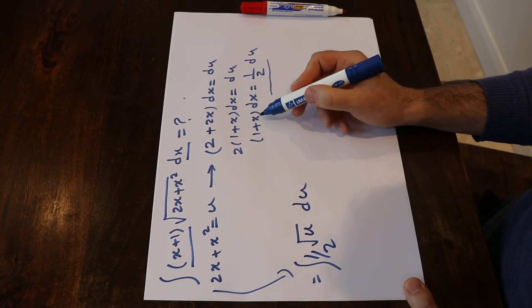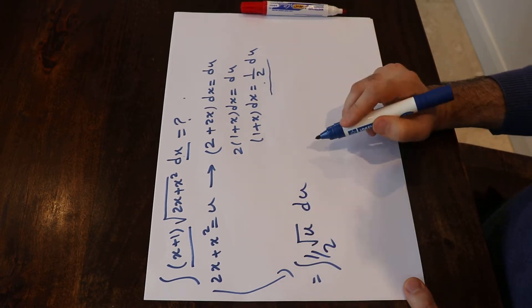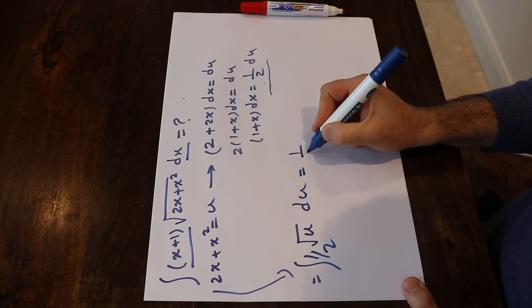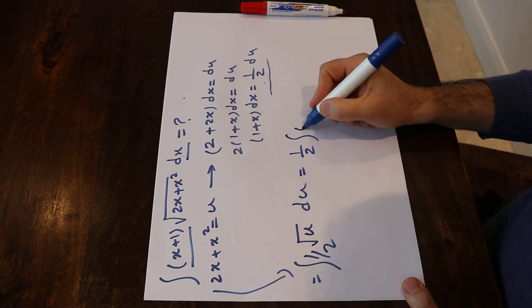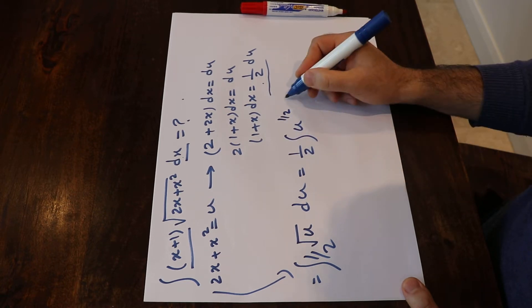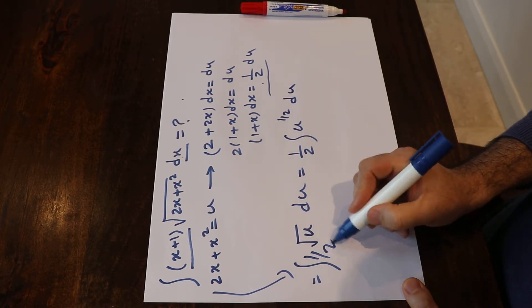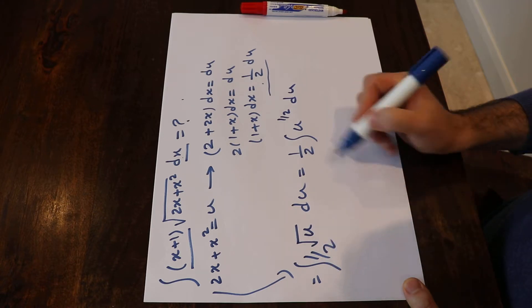Because here we obtain that (x+1)dx is equal to ½du. This will be equal to ½ times the integral of u^(1/2) du. Note that here, since ½ is constant, I can take it out of the integral.